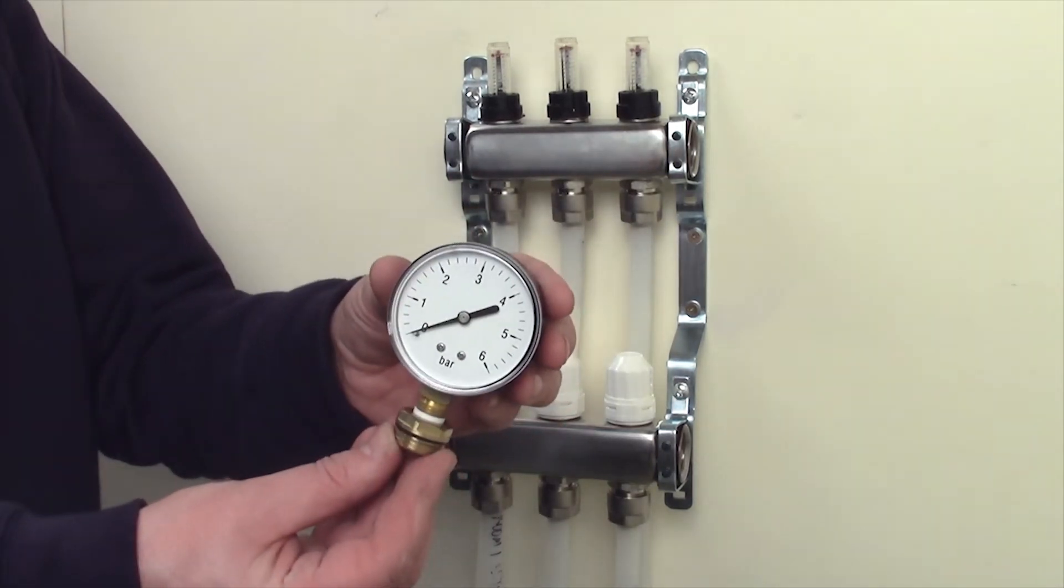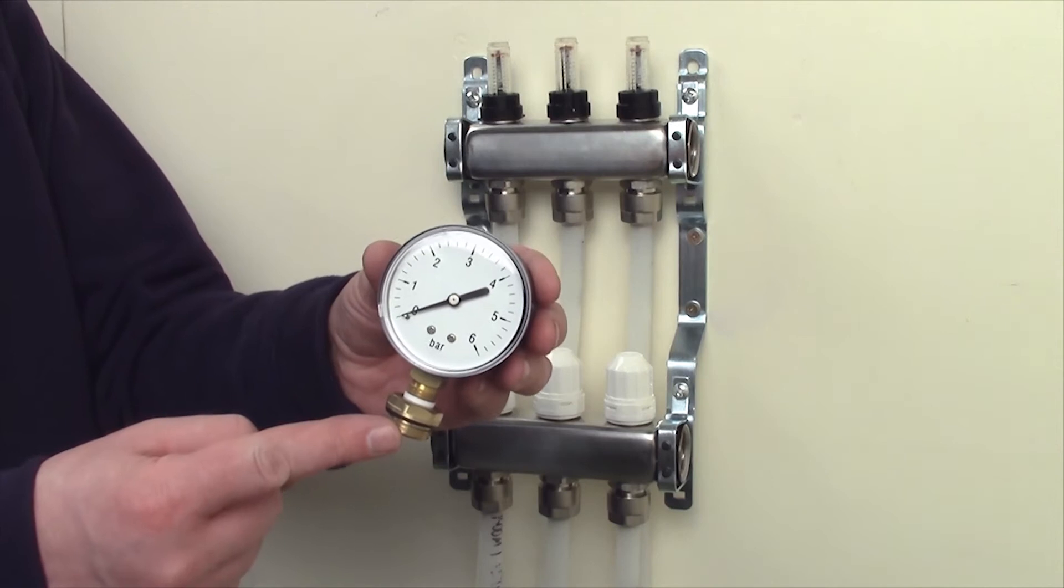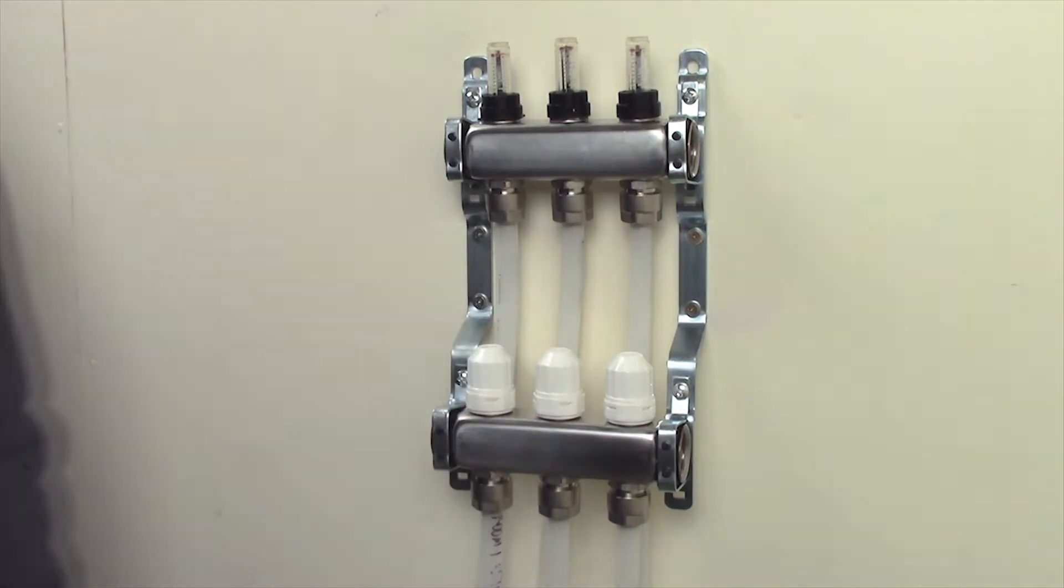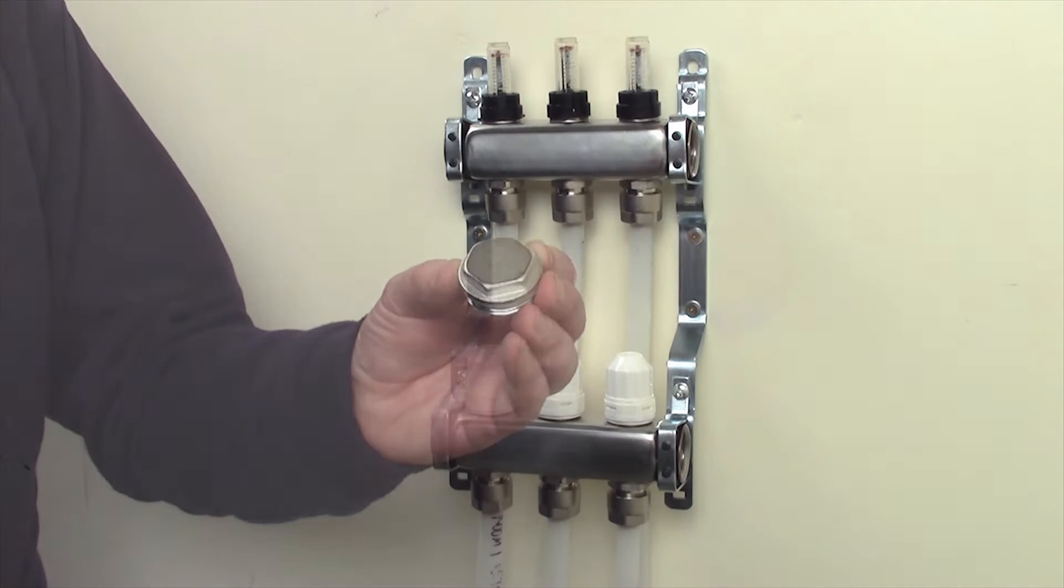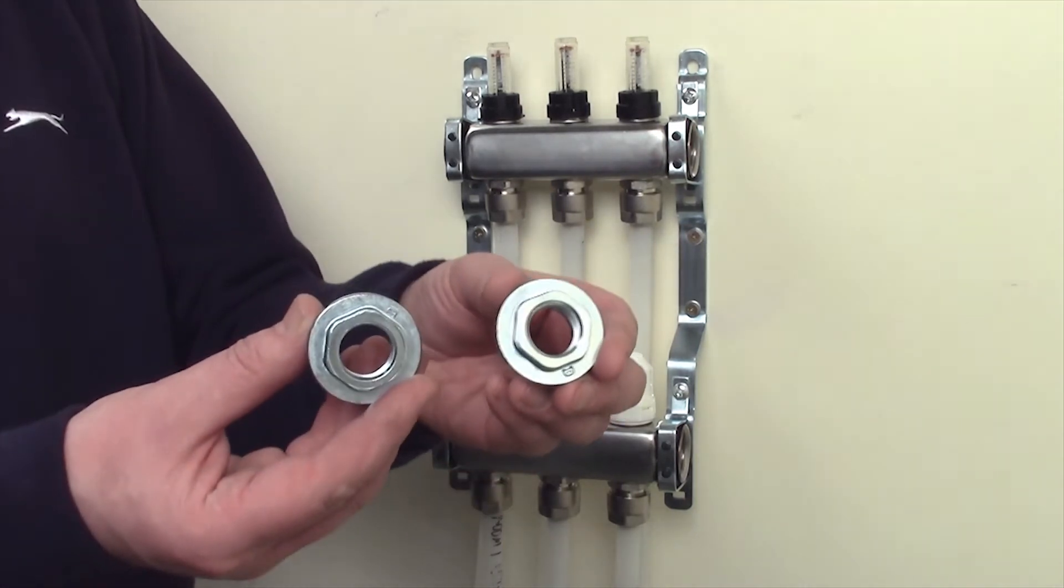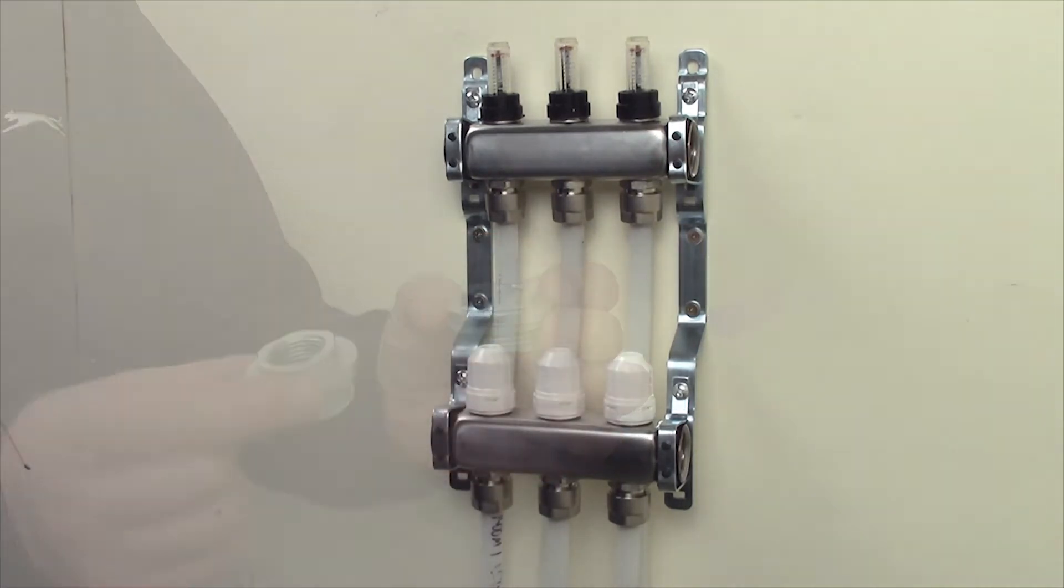Included in the kit is one pressure gauge, an adapter, one one-inch male blank, two one and a half inch bushes, and one drain cock.